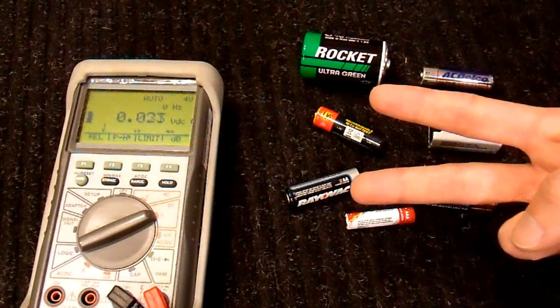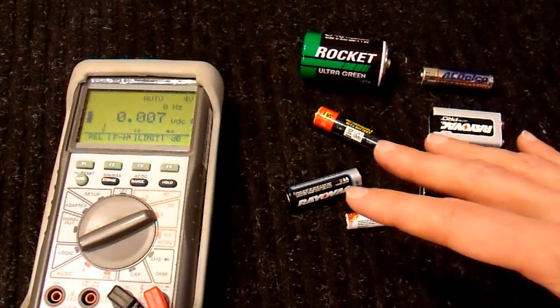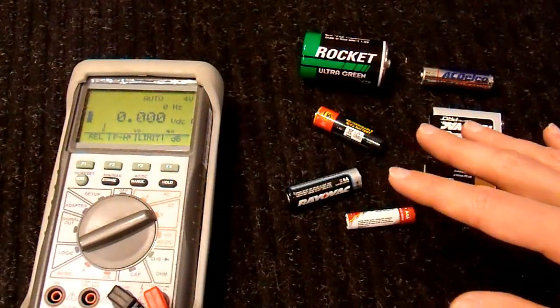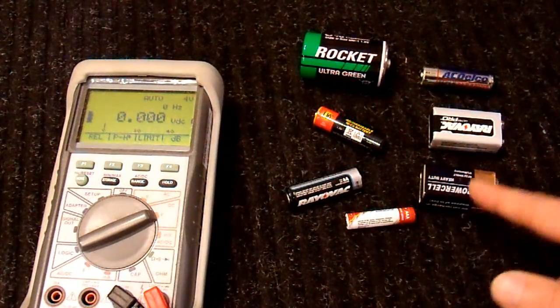There are two parameters in a battery that describe whether it is good or not. And it depends on the application. One is the voltage. It has to have enough voltage to drive your load. Two, it has to have a low enough internal resistance.